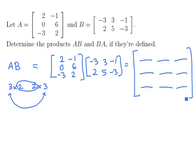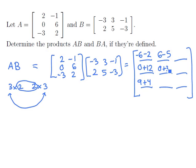There are going to be 9 separate dot products. The first row, first column element is the first row of A dotted with the first column of B, which gives minus 6, minus 2. The second row and first column gives 0 plus 12. The third row and first column gives positive 9 plus 4. Moving to the second column: first row gives 6, minus 5; second row gives 0 plus 30; third row gives minus 9 plus 10. For the third column: first row gives minus 2 plus 3; second row gives 0 minus 18; third row gives 3 minus 6.